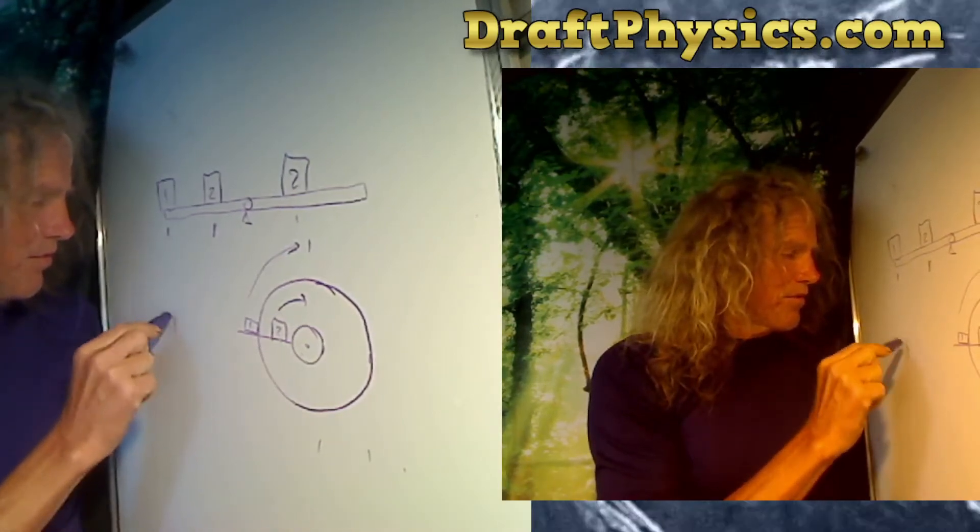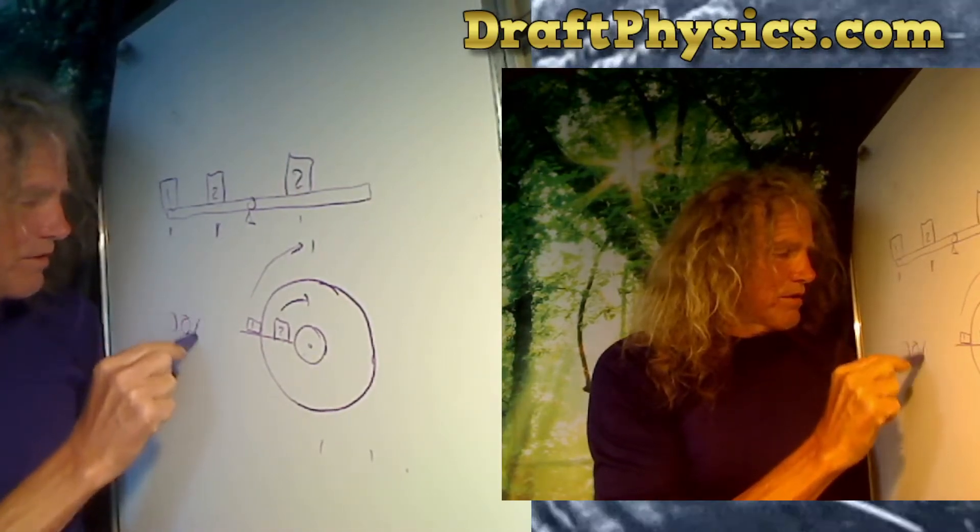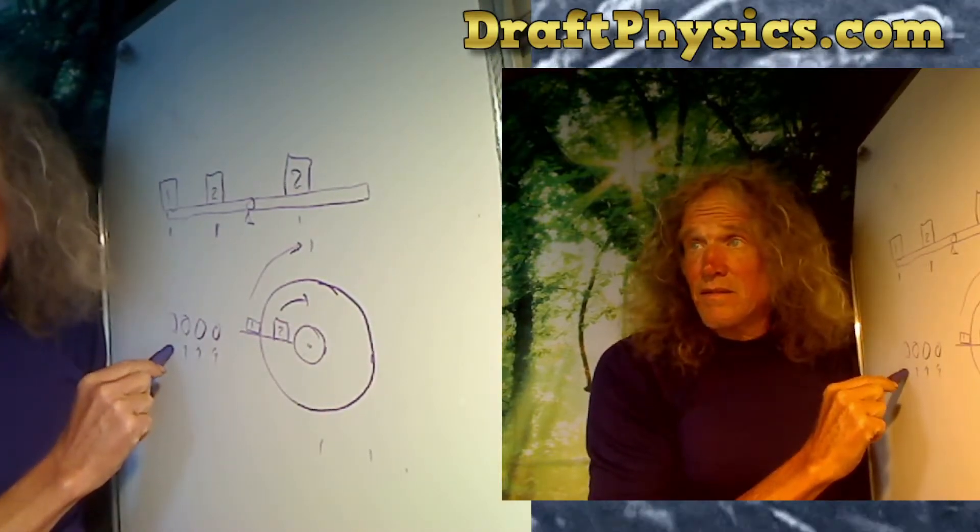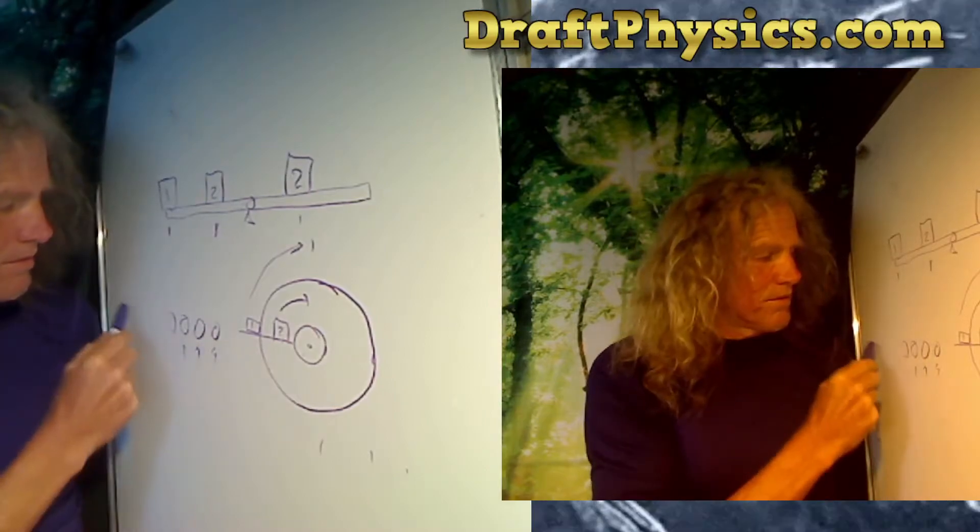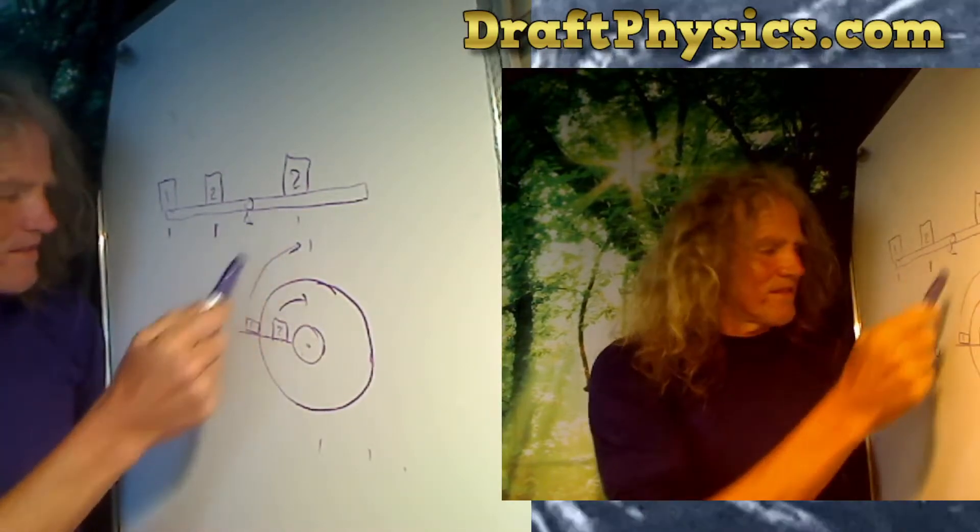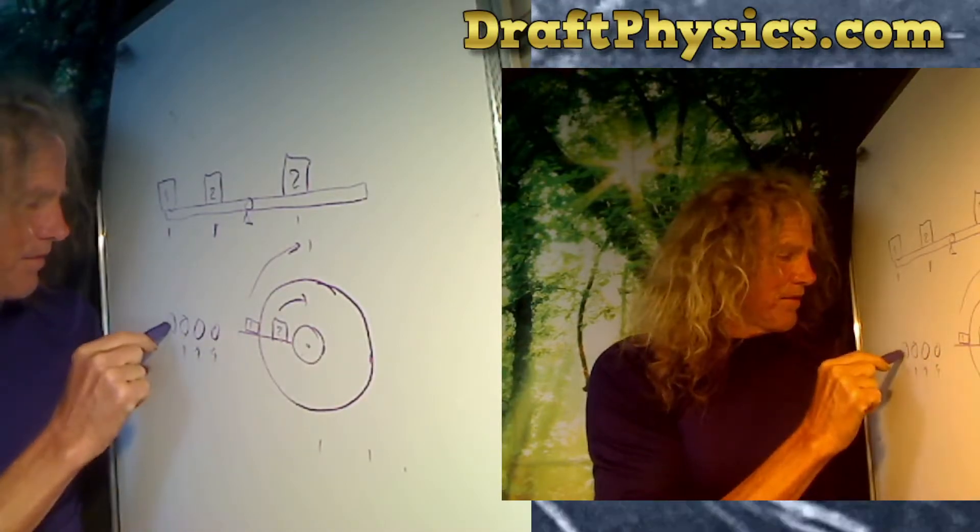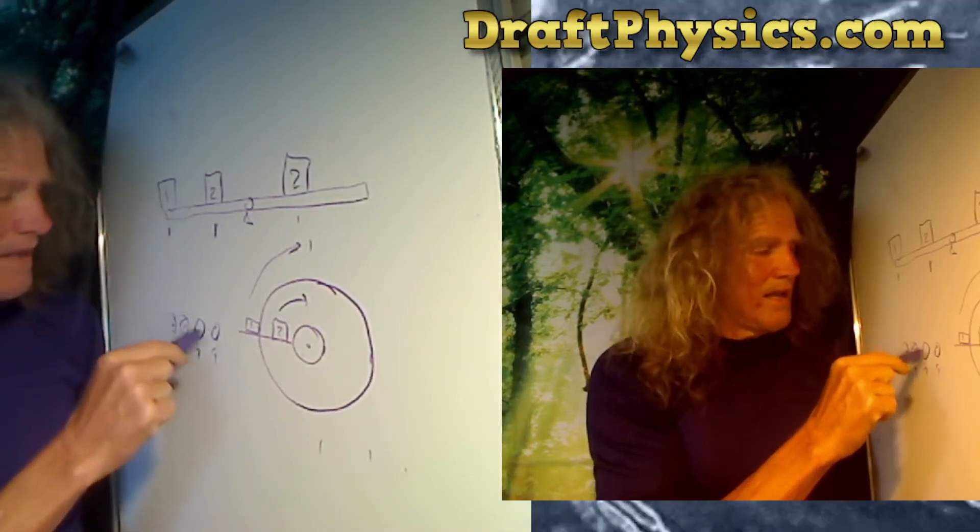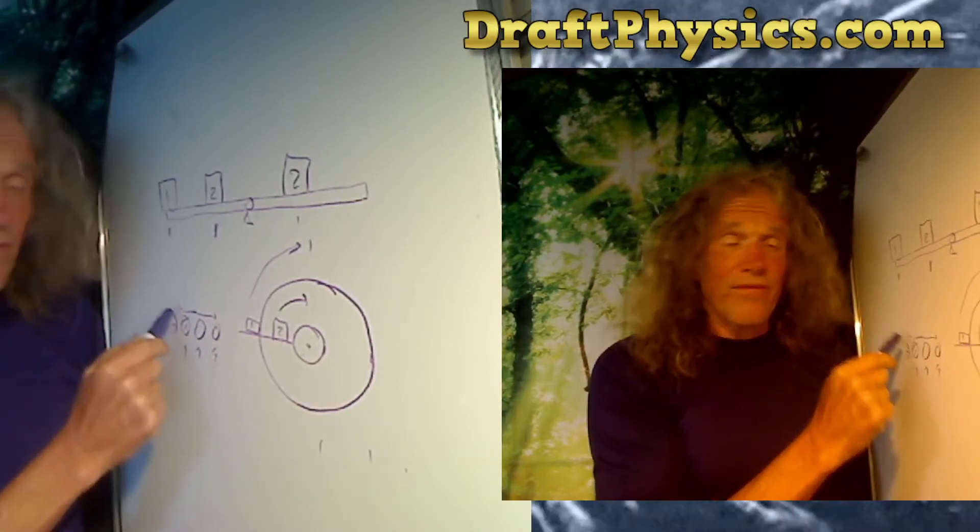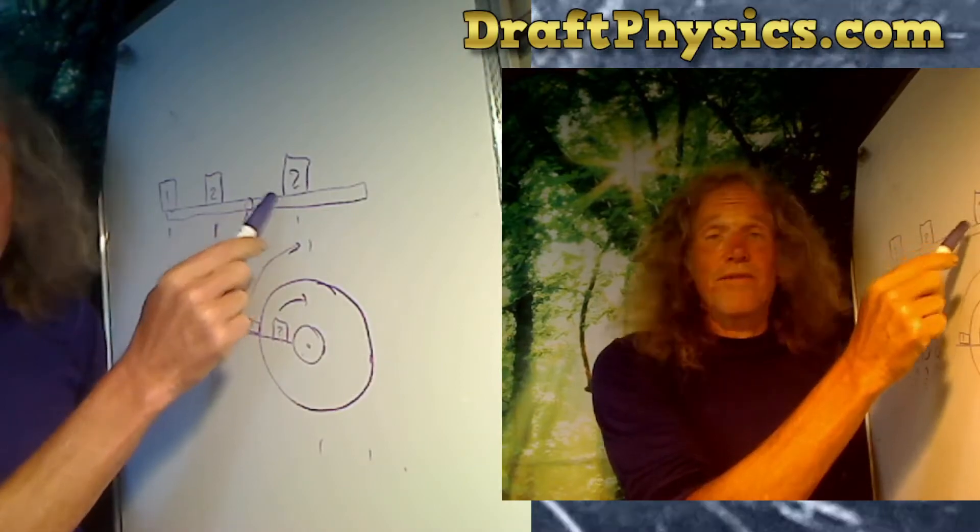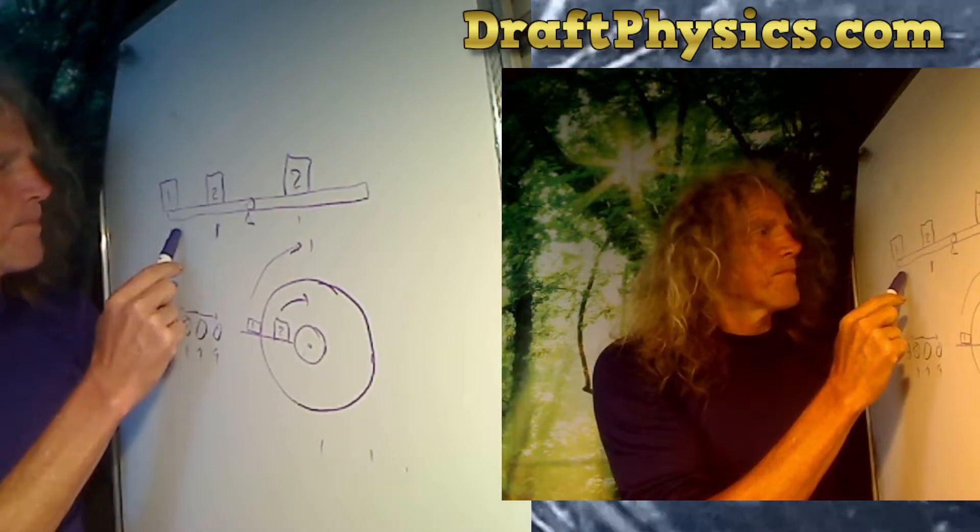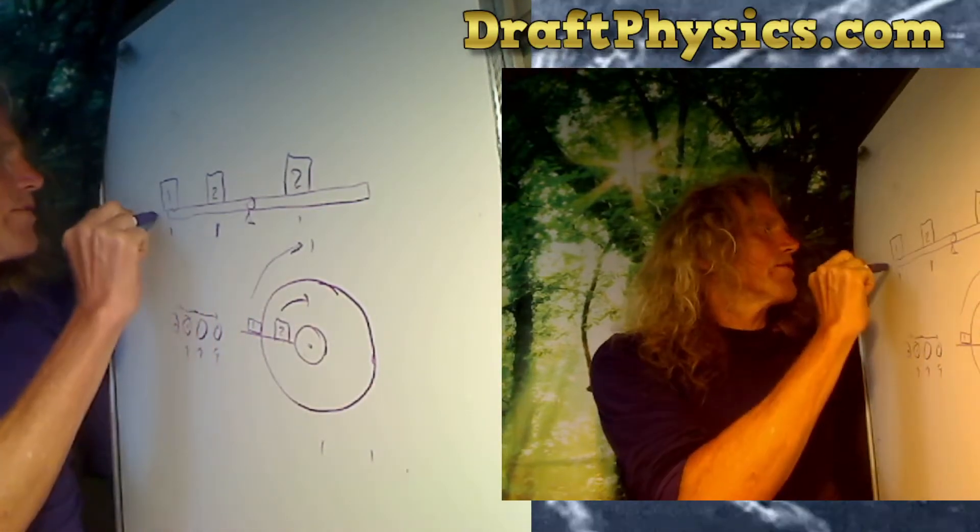This gets back to Newton's cradle. Newton's cradle works because you're using same size masses, but if you use different size masses Newton's cradle won't work because the masses can't make a clean conversion. The lever is essentially saying that I can have different masses at different velocities and I can do a conversion between them and transfer all of the energy. I can transfer all of the energy on one side of the lever to the other side with a different mass.